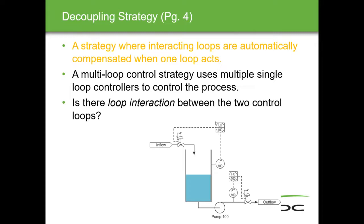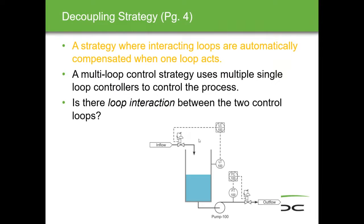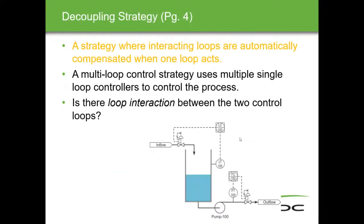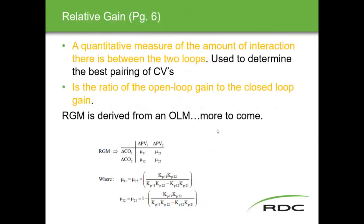It adapts in either direction or both at the same time. A multi-loop strategy uses multiple single-loop controllers — a flow controller and a level controller — which is primitive. Is there interaction between the control loops? Yes — we increase the flow and it affects the level, but increasing the level doesn't affect the flow. So there is interaction and we want to minimize it.